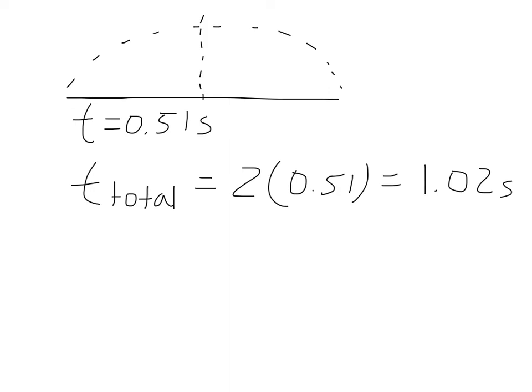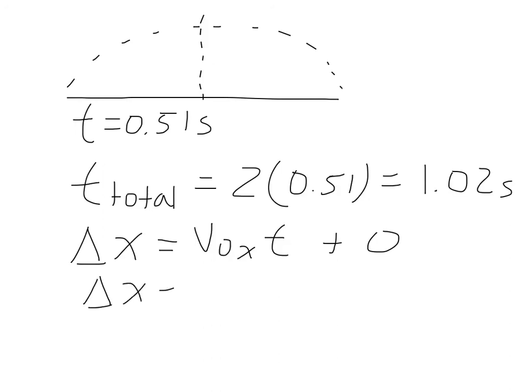To figure out the displacement of the ball along the x direction, remember that the velocity along x is still constant. The delta x formula gives us: displacement along x equals the initial velocity along x multiplied by the time, plus zero — since the acceleration along x is zero, that term drops out. So delta x equals 8.66 meters per second multiplied by the total time of 1.02 seconds.